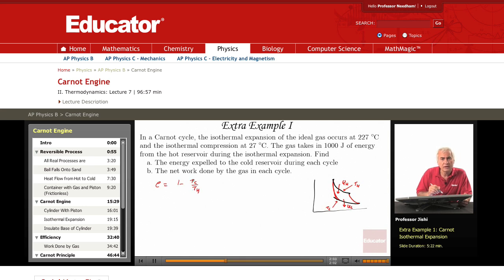So that's 1 minus TC, that's 27 degrees, TH is 227. If you write 1 minus 27 over 227, that's wrong. This is in Celsius degrees, it has to be converted to Kelvin.